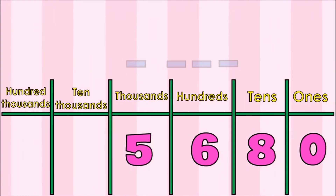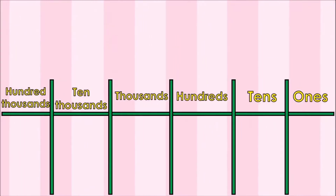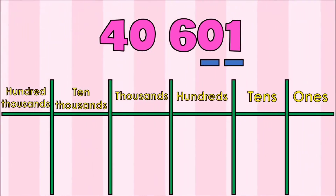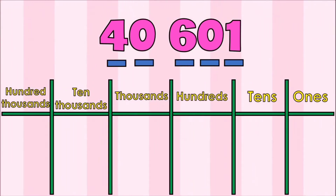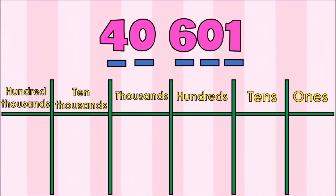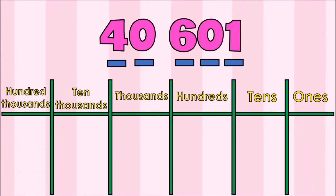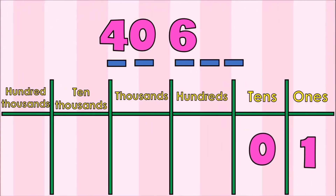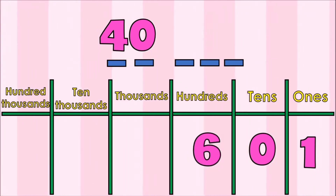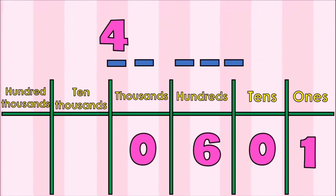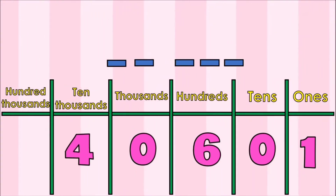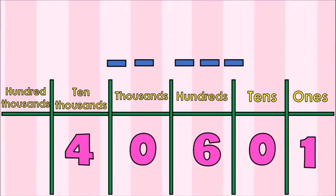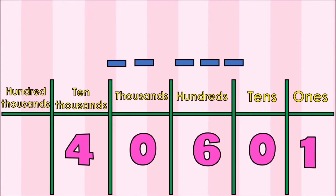Another example: I have 40,601 with 5 digits — 1, 0, 6, 0, and 4. Let's put each digit into the place value chart. What is the place value of 1? It's in ones place. 0 is in tens place. 6 is in hundreds place. 0 is in thousands place. And 4 is in ten thousands place. This gives us 40,601. As you notice, the higher the number becomes, the greater the place value of each digit.